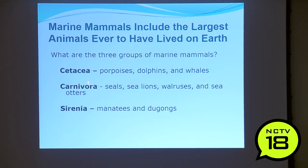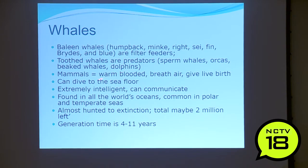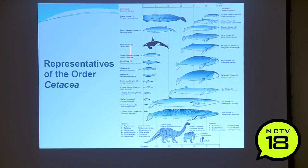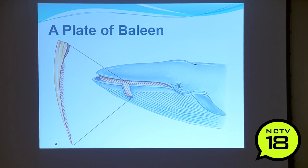Marine mammals include the largest animals ever to have lived on earth. The three types are cetaceans, carnivores, and sirenians. Sirenians are manatees and dugongs. The carnivores are seals, sea lions, walruses, and sea otters. Cetaceans are porpoises, dolphins, and whales. Whales are found in all the world's oceans, most commonly in polar and temperate seas. Generational time is 4 to 11 years; they can live over 100 years. Here are the different cetaceans from pygmy right whale to blue whale — about half of them we see around Nantucket. A blue whale compared to a human, a child, an African elephant, and a brontosaurus.